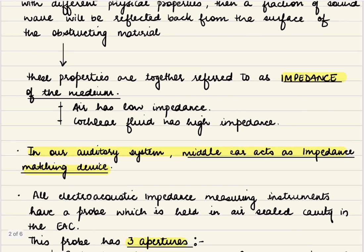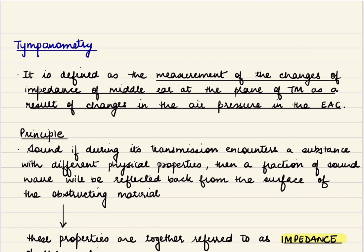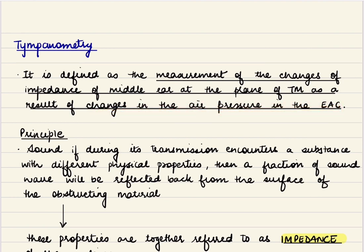Air has low impedance and cochlear fluid has high impedance. In our auditory system, sound waves travel from air to the cochlear fluid. The middle ear is the impedance matching device. Basically, what we do is change the pressure in the external auditory canal and with these changes we measure the changes in impedance of the middle ear.